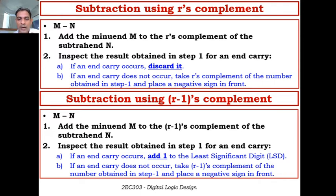If an end carry does not occur, take the R-1's complement of the number obtained in step 1 and place a negative sign in front. These are the steps for subtraction using R's complement and R-1's complement.